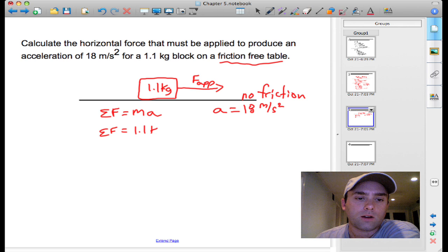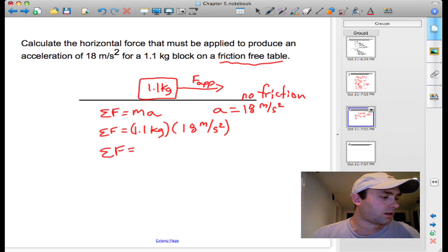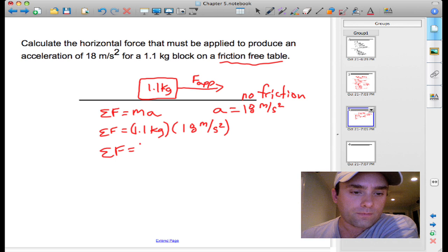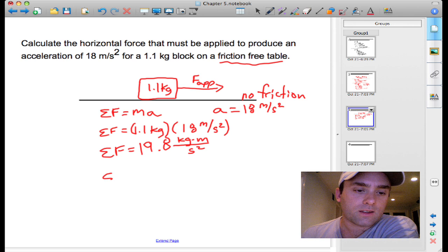So 1.1 kilograms times 18 meters per second squared gives you the acting force on the object of 19.8 kilograms meter second squared. And again, that is the same unit as the Newton. So it's 19.8 Newtons.